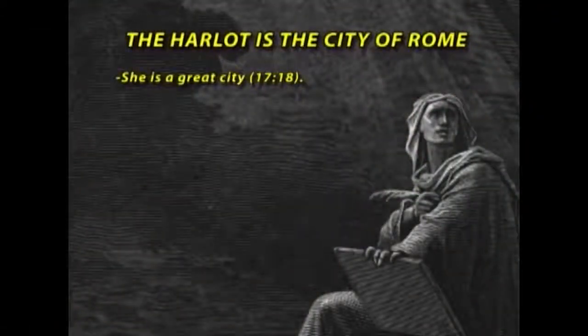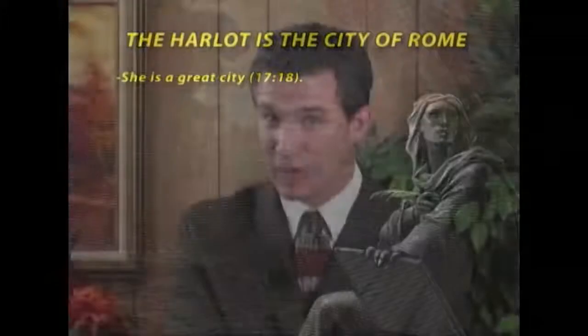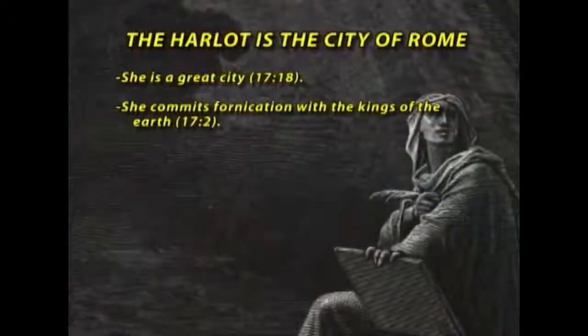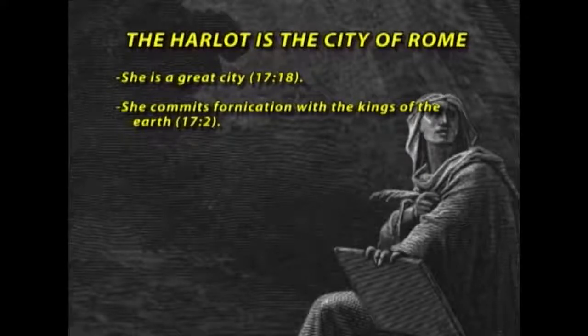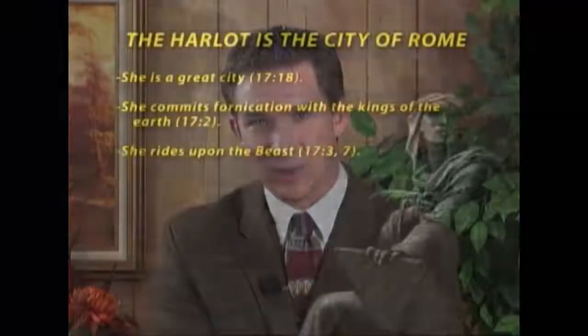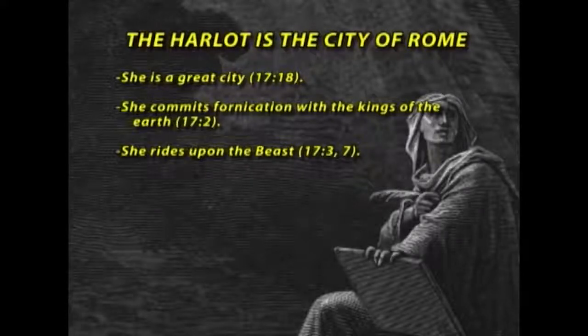Revelation 17, verse 18: this harlot is mentioned as a great city. During the writing of Revelation, there was no city greater than Rome — millions of people living there, a great world force. The Bible says in Revelation 17, verse 2, she had committed fornication with the kings of the earth. Who was making alliances and bringing people under her power? Rome was. This city rides upon the back of the beast — Rome rides on the back of her own rulers.